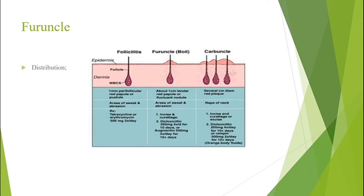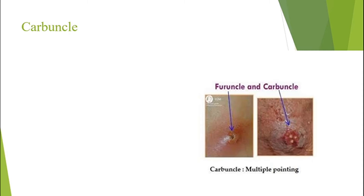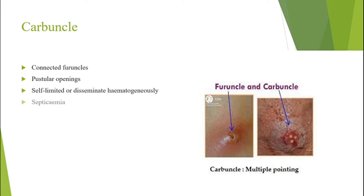Distribution of furuncles involves the neck, axilla, and buttocks. A carbuncle consists of connected furuncles with several pustular openings. It can be self-limited or disseminate hematogenously, and can also cause life-threatening septicemia.